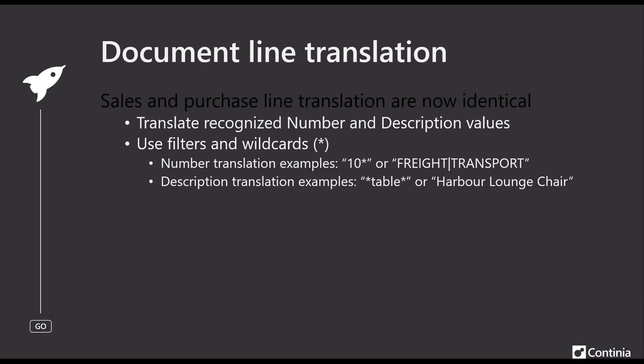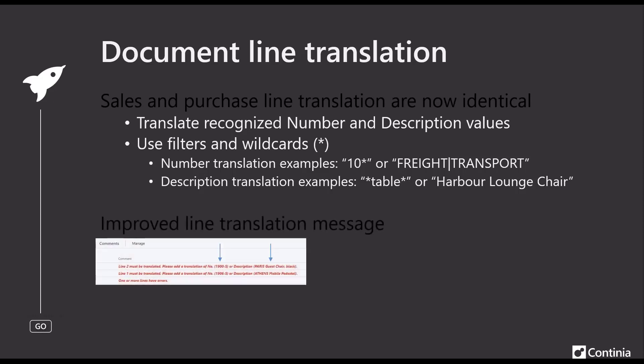Besides this addition to sales documents, we generally improved the line translation message. So when you have a new line recognized where you need to translate it to an account, or have DogmaCapture apply the account through translation, you are now notified at the bottom with a bit more information. You can now see the values in the number column and the description column, guiding you to what is possible to translate, so you can easily get an overview of what you should do and what is missing.